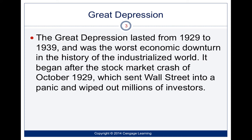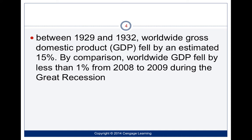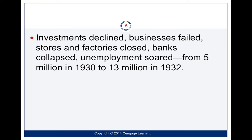Our GDP fell by an estimated 15% during that time. GDP, or gross domestic product, measures the prosperity of your country and how much revenue it generates. By comparison, in 2008 during the Great Recession, GDP only fell 1%. The unemployment soared and we went from 5 million unemployed up to 13 million in 1932 — 13 million people out of work.